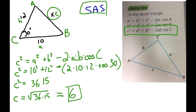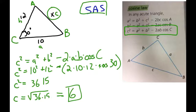The key thing to remember is: no matter what the triangle is, call the angle you're given and the side you're looking for C. Always start with C as the given angle and the side you're looking for. If you do that, the rest of the problem will work pretty simply.